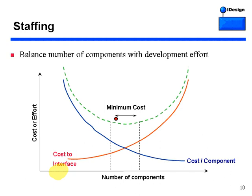The green line has an area of minimal cost. Whenever you design a system, you want to aspire to be in this area of the graph where components are not too big and not too small, not too many and not too few, not too coupled and not too decoupled — just right. The way to get to this area of the graph is you hire an architect, and then it's his problem.